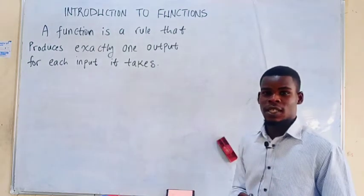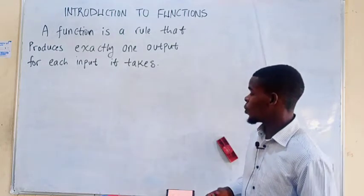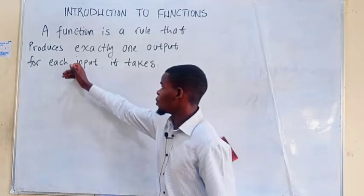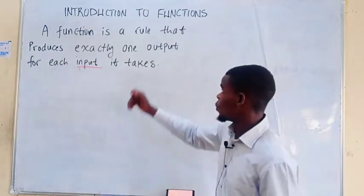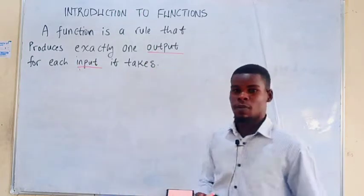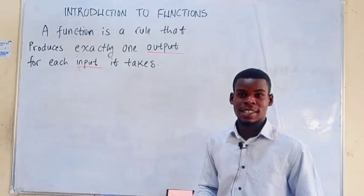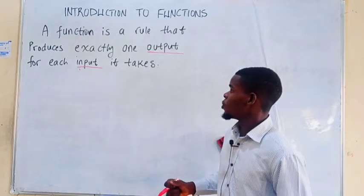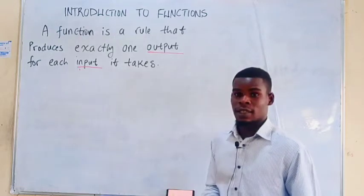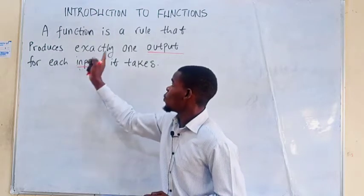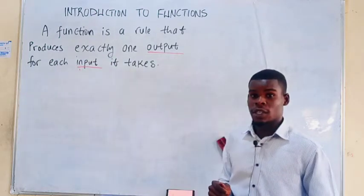This mathematical rule relates two things together. The first one is called the input, and then the second one is called the output. This input and output, in most cases, they are just real numbers. So, a function is a rule that produces exactly one output for each input.